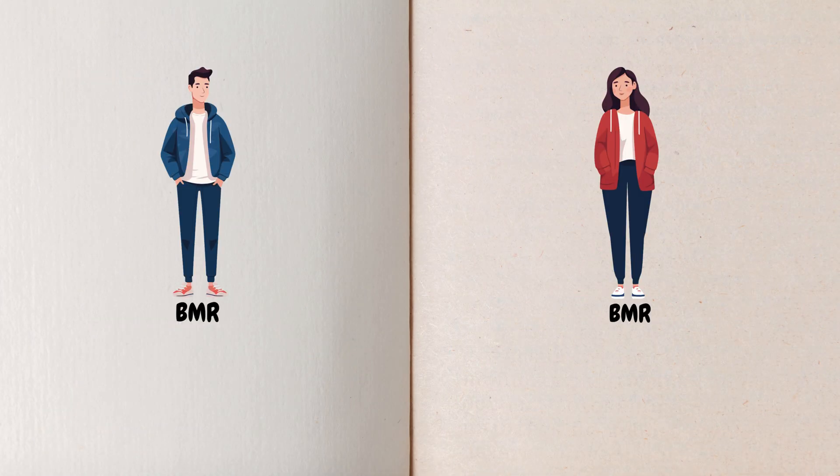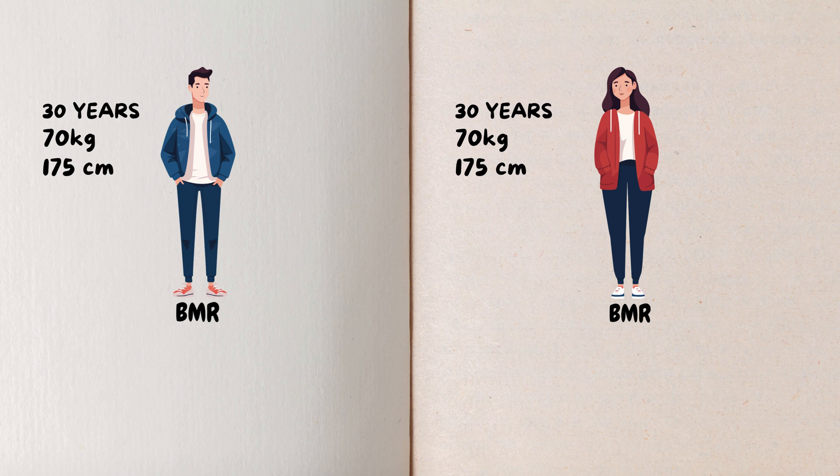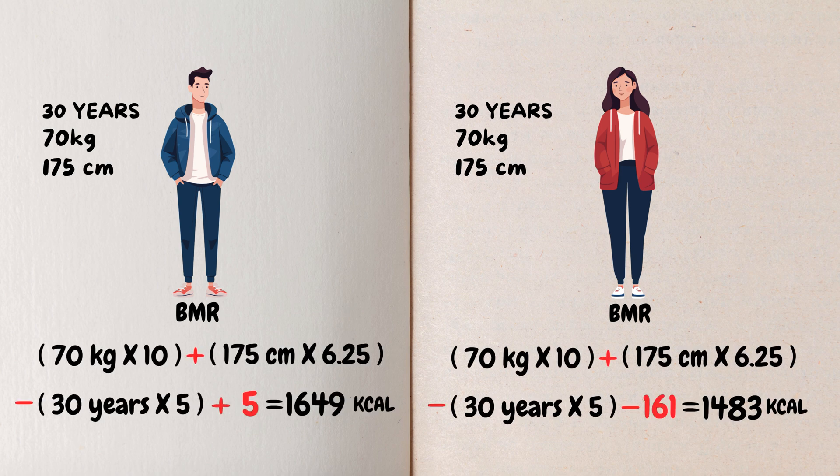Let's say we have a man and a woman. Both are 30 years old, weigh 70 kilograms, and are 175 centimeters tall. In this example, the man's BMR is approximately 1,649 kilocalories per day, while the woman's BMR is approximately 1,483 kilocalories per day. This difference highlights how the small changes in the equation adjust for the biological differences between men and women, providing a more accurate estimate of daily energy needs.